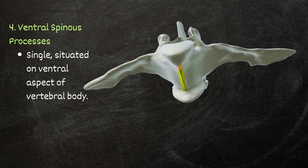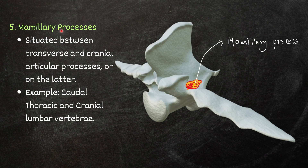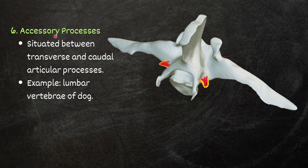The ventral spinous process is a single process present on the ventral aspect of the body of the vertebra. It is less developed and serves for attachment of muscles and ligaments. In some vertebrae, such as caudal thoracic and cranial lumbar vertebrae, mammillary processes are found between the transverse and cranial articular processes. Accessory processes, found for example in the lumbar vertebrae of the dog, are present between the transverse and caudal articular processes.